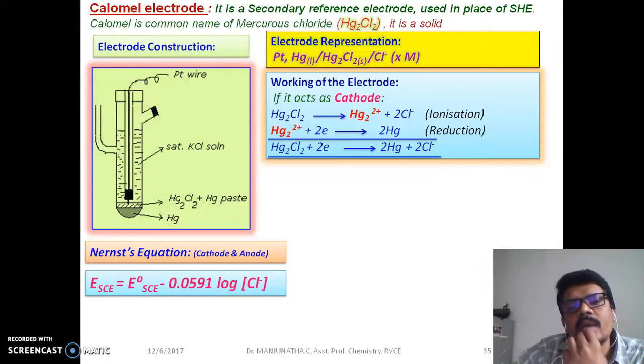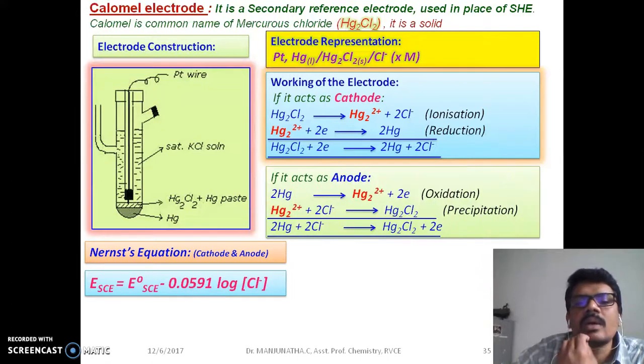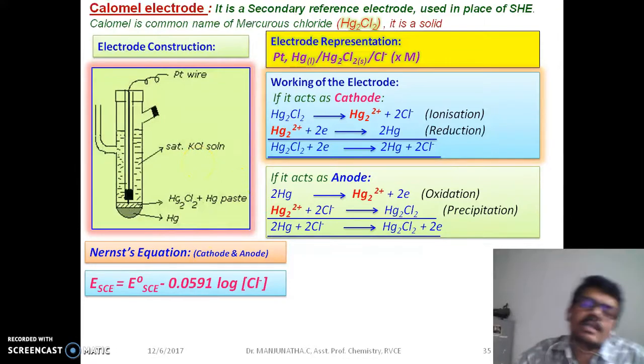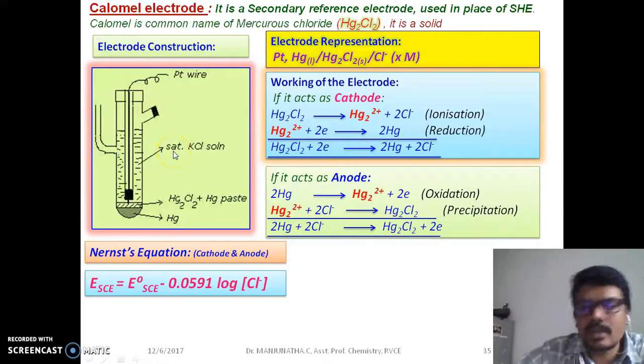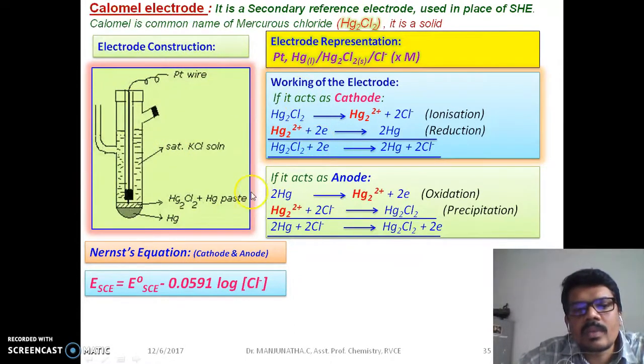This can also behave as anode. Let us look at how the reactions are taking place when this calomel electrode acts as anode. If it acts as anode, we can expect oxidation reaction in this electrode. Oxidation means something should lose electrons.